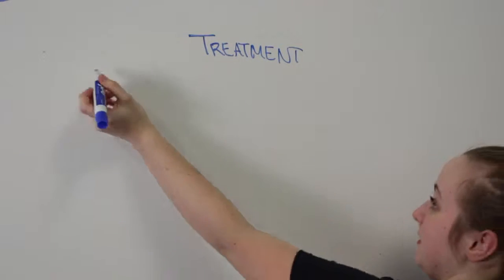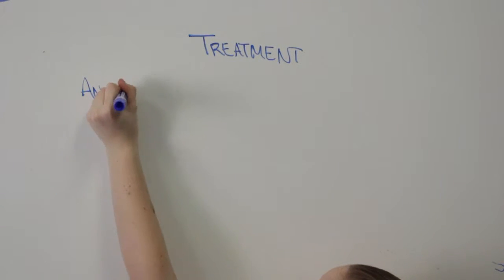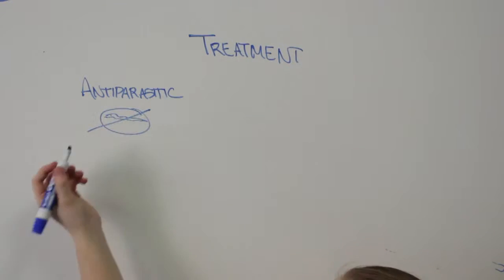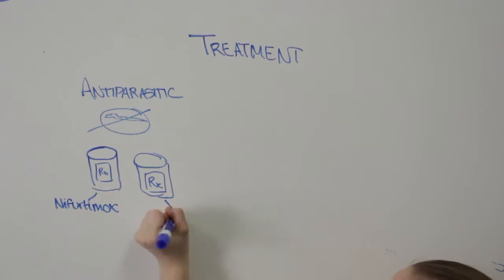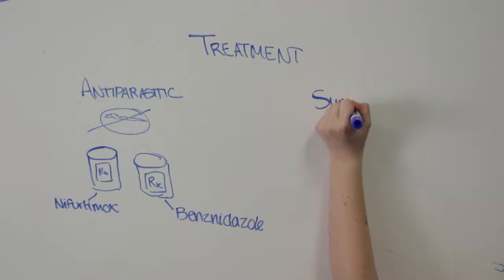Treatment for Chagas depends on the stage of the infection, but treatment is generally only effective in the acute phase, where the medicines are anti-parasitic, as opposed to treatments in the chronic phase, which directly manage the complications rather than treating the underlying illness.